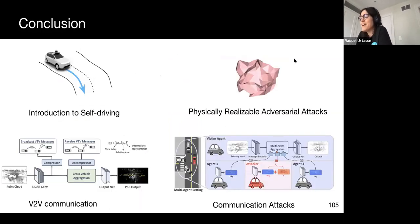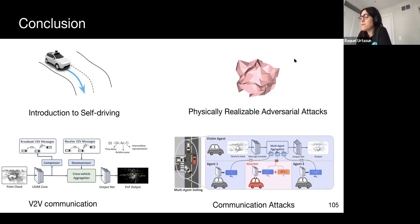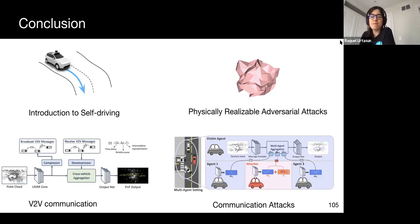To conclude, I have talked about how to create universal adversarial attacks that are physically realizable for modern state-of-the-art 3D perception algorithms in self-driving. I have then discussed how to increase robustness by exploiting vehicle-to-vehicle communication and how this might introduce additional vulnerabilities for adversarial attacks. Finally, I have shown how to be robust to localization errors by exploiting a multi-agent cooperative consensus framework. This is all for me today — thanks for your attention.